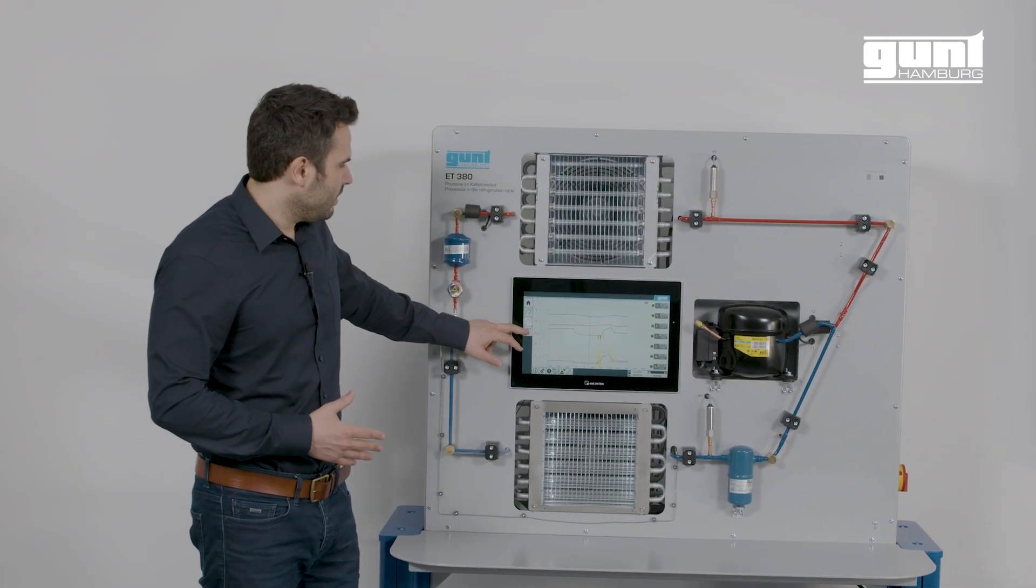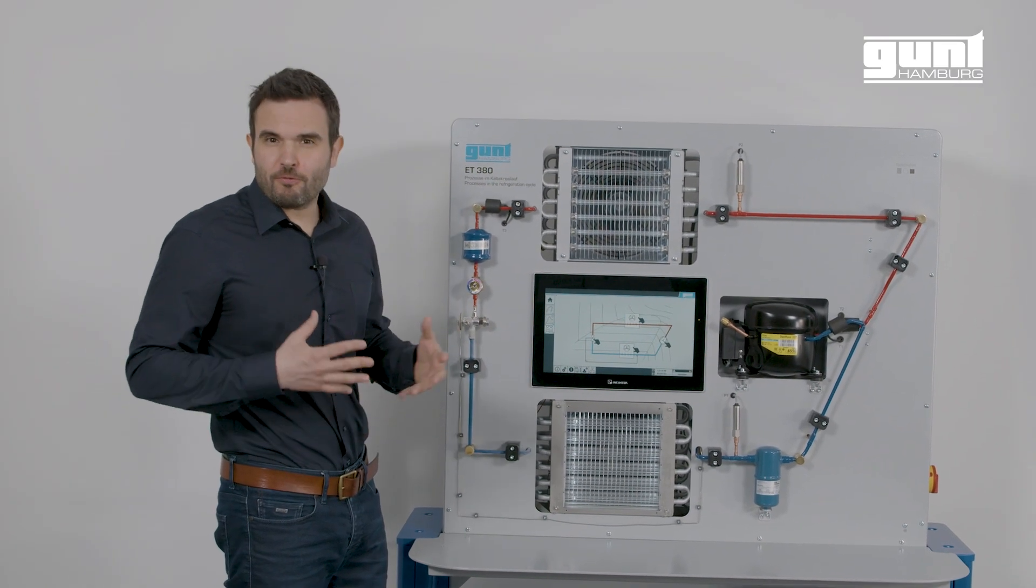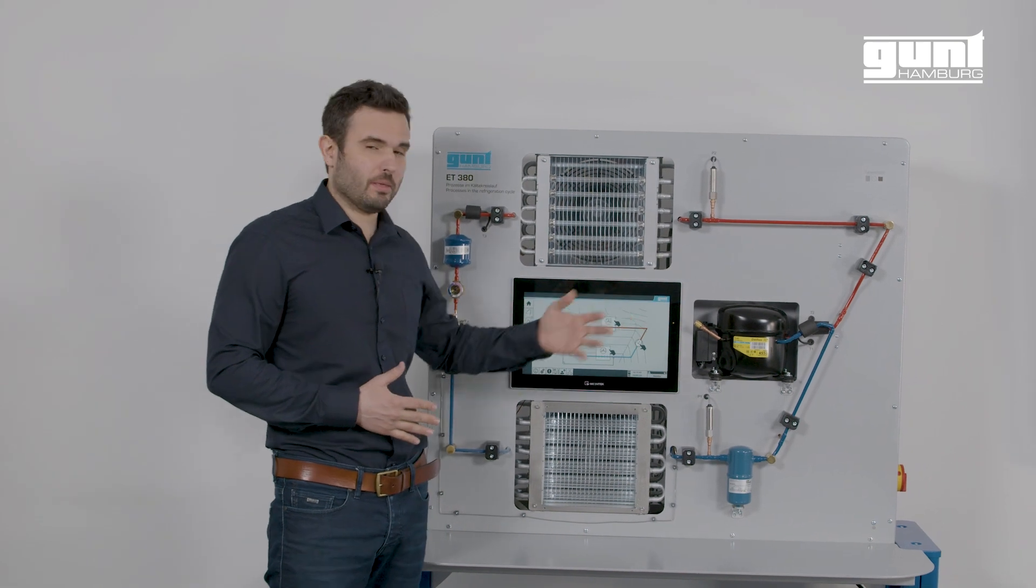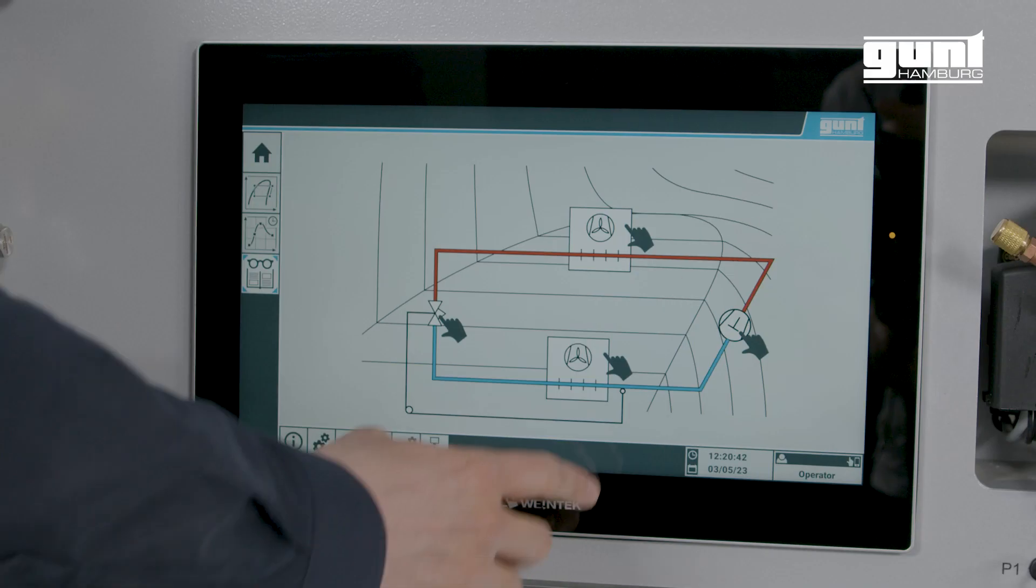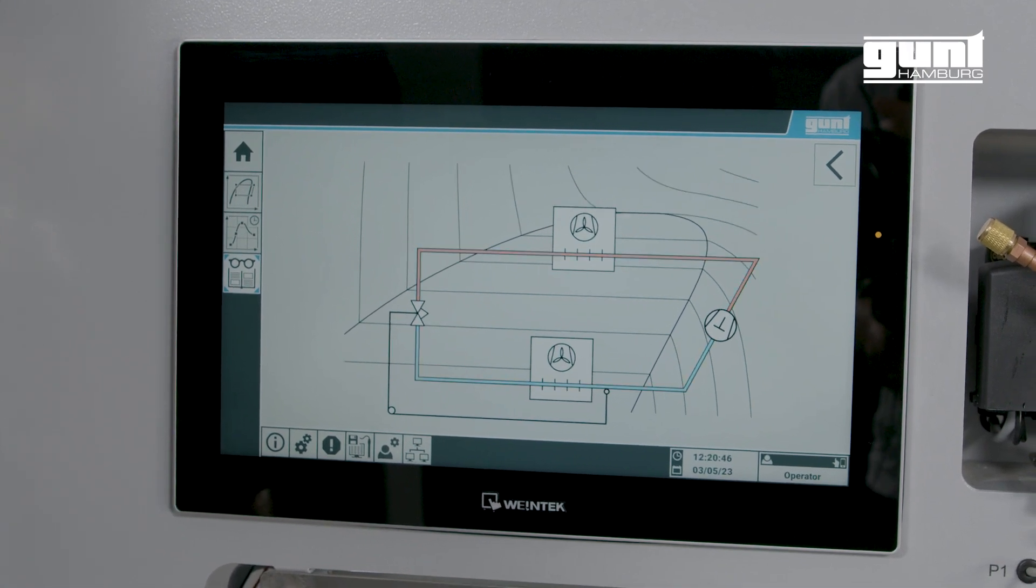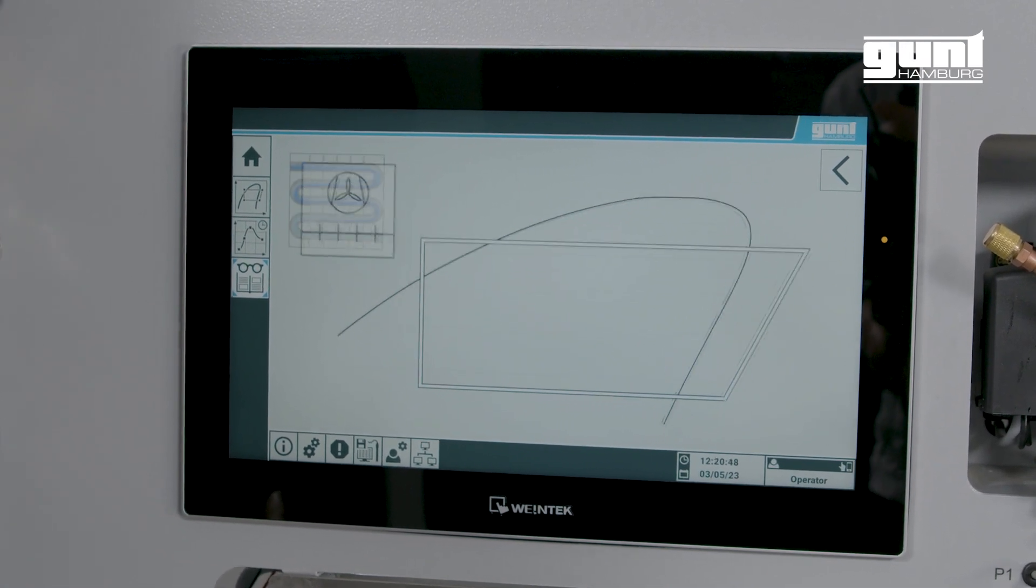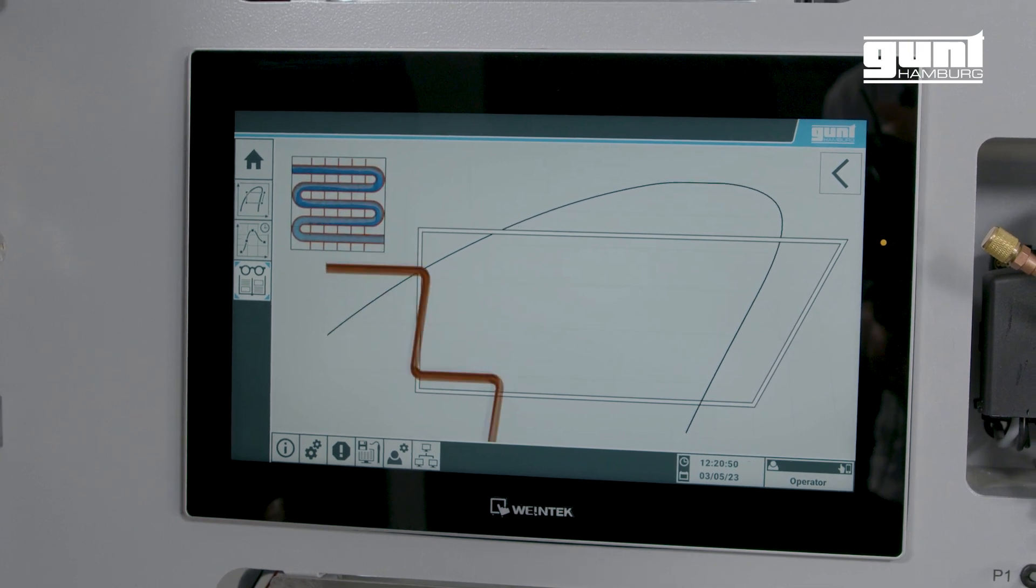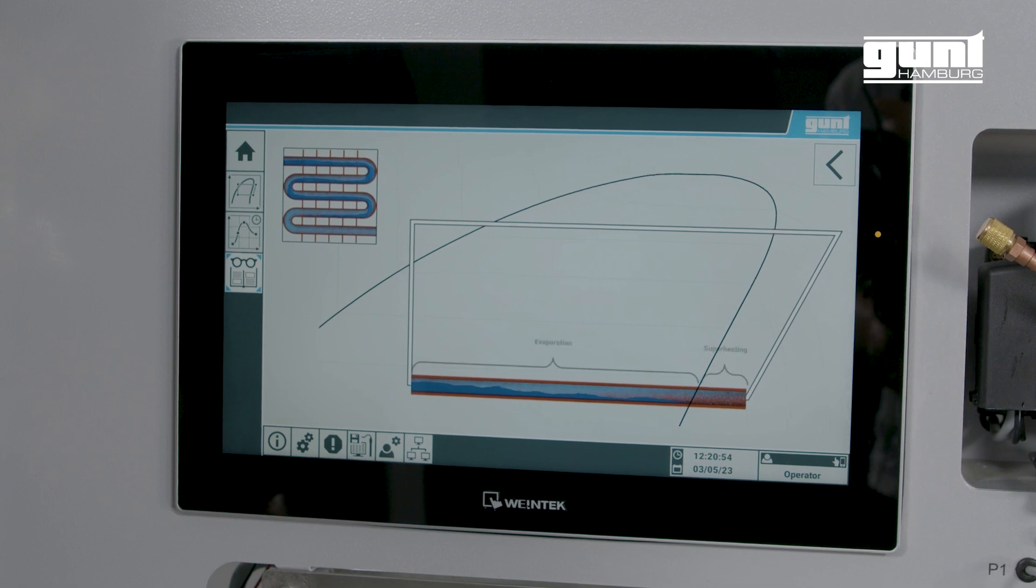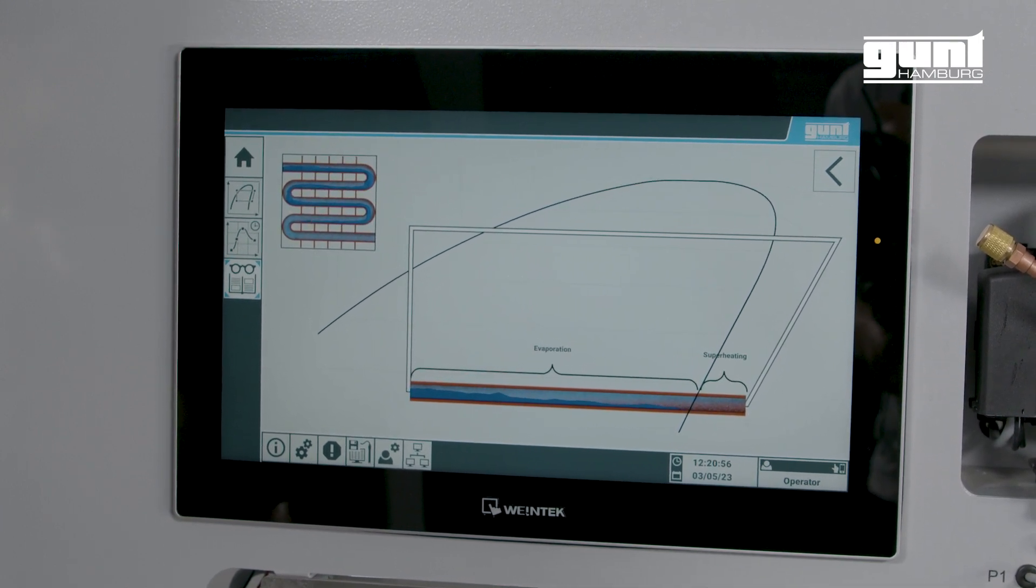On the next button we have animations of the four main components to help students see inside the components. Let's have a look at the evaporator. We can see what happens in the different phases. So within the wet vapor phase we see the actual evaporation, and in the overheated phase we can see the superheating of the gas.